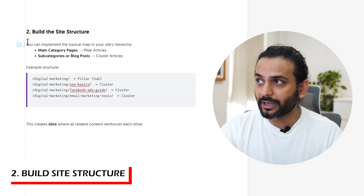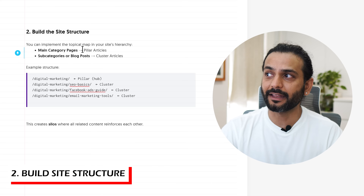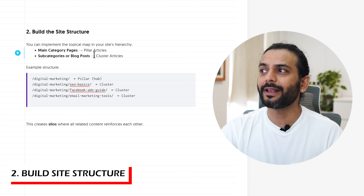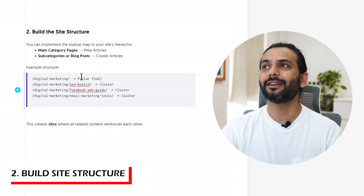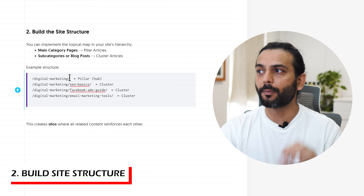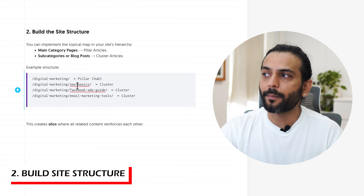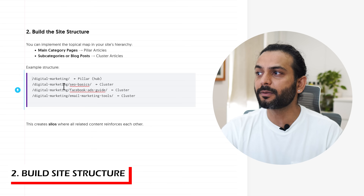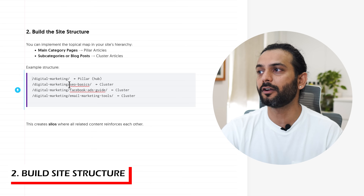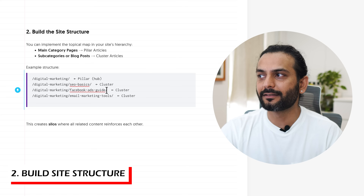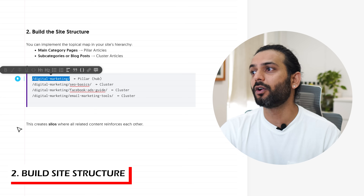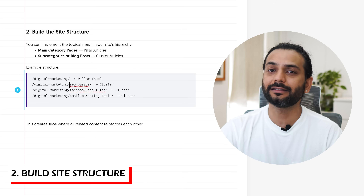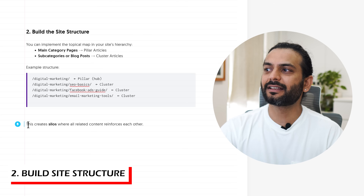The second tip is to build your site structure. Implement the topical map in your site hierarchy — main category pages will be pillar articles, and subcategory blog posts will be cluster articles. For example, a category called 'Digital Marketing' is the pillar content with a URL like /digital-marketing. Then subtopics like /digital-marketing/seo-basics, /facebook-ads-guide, and /email-marketing-tools are all cluster content for that main pillar.